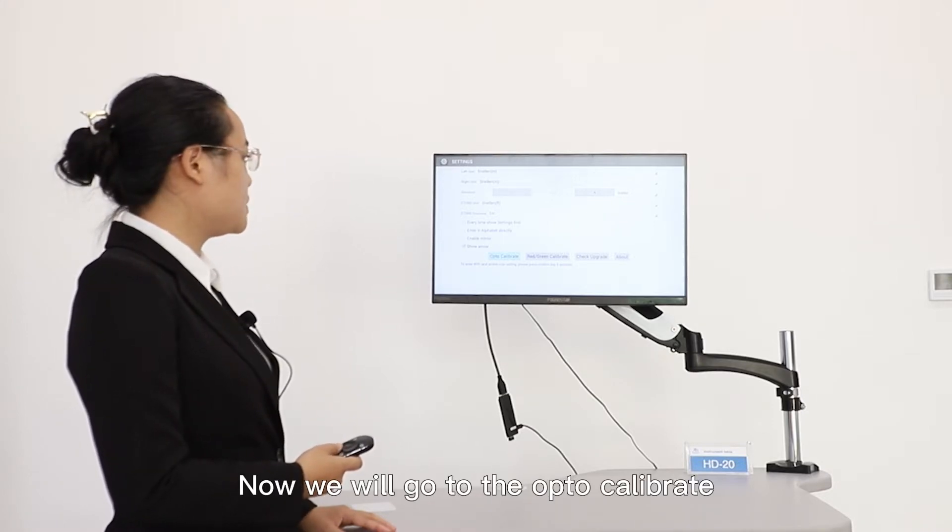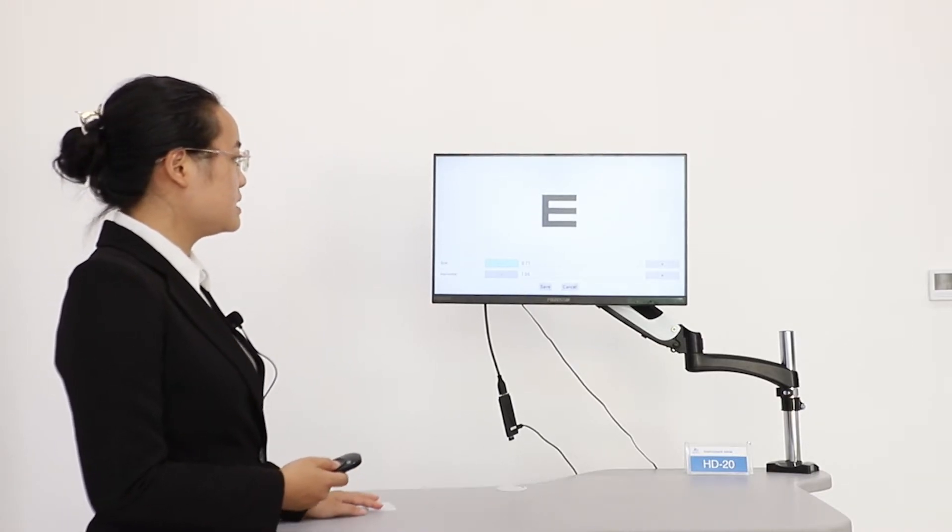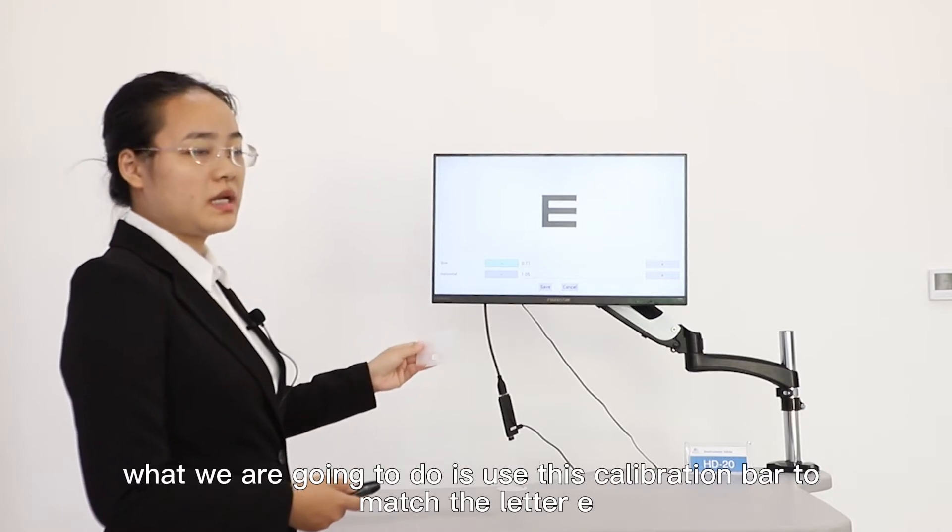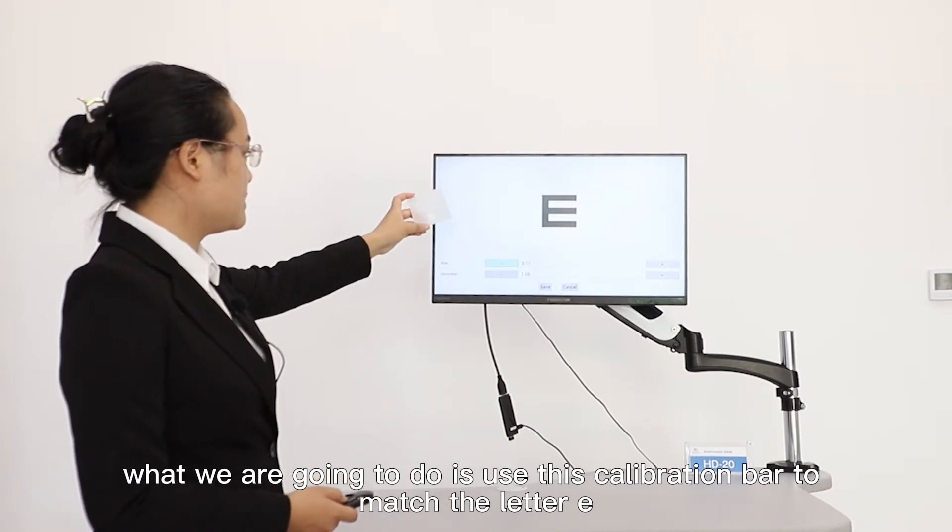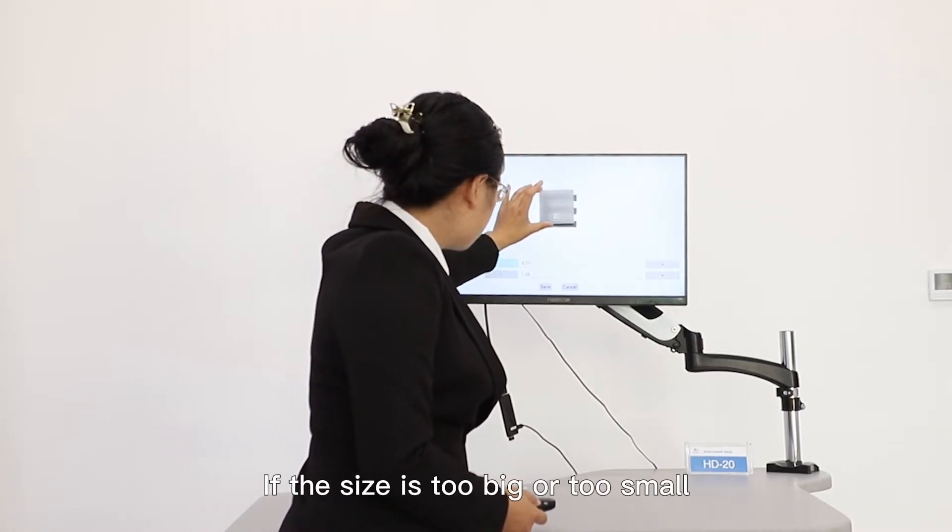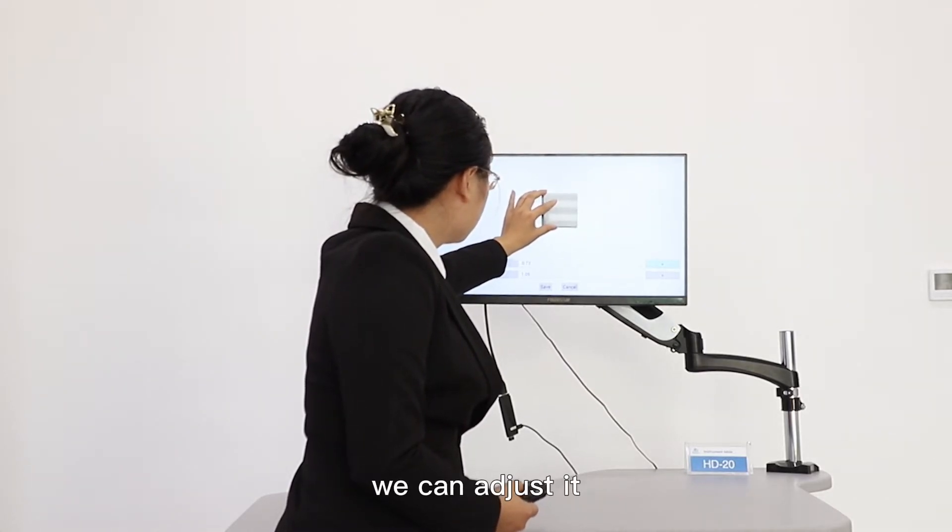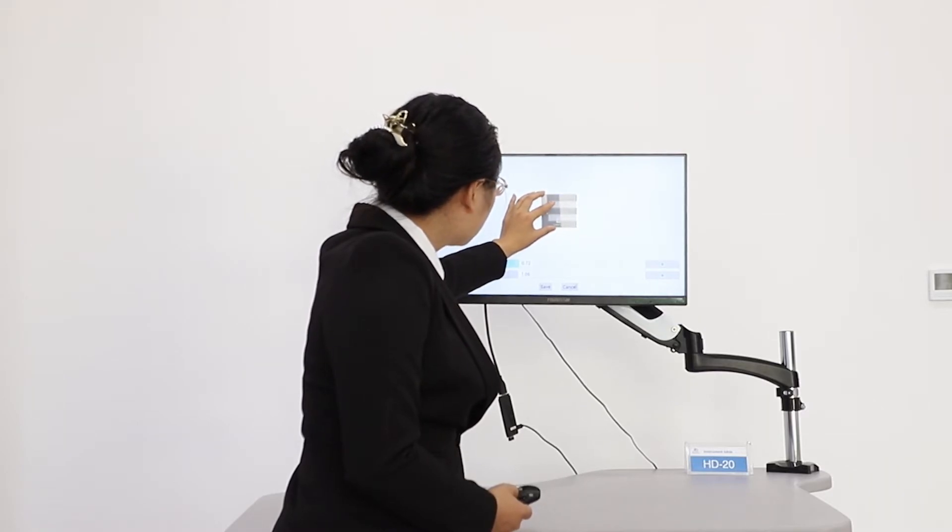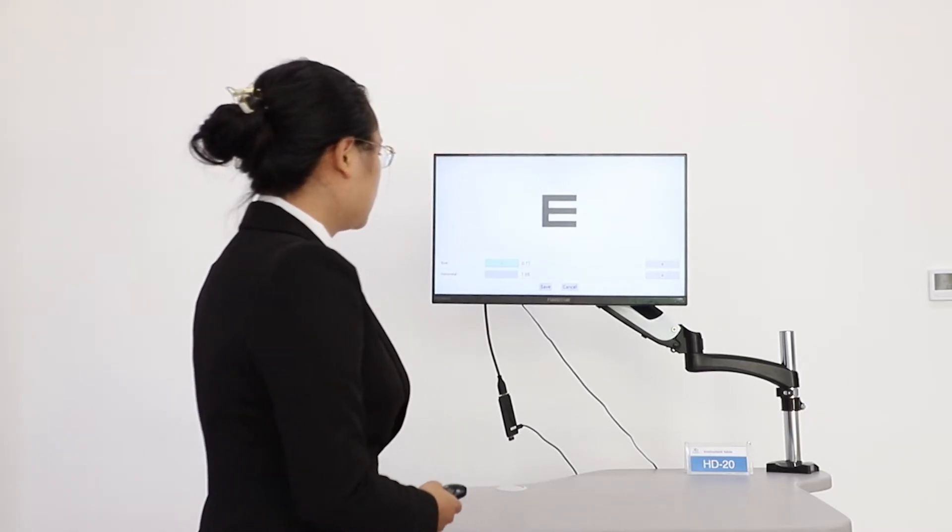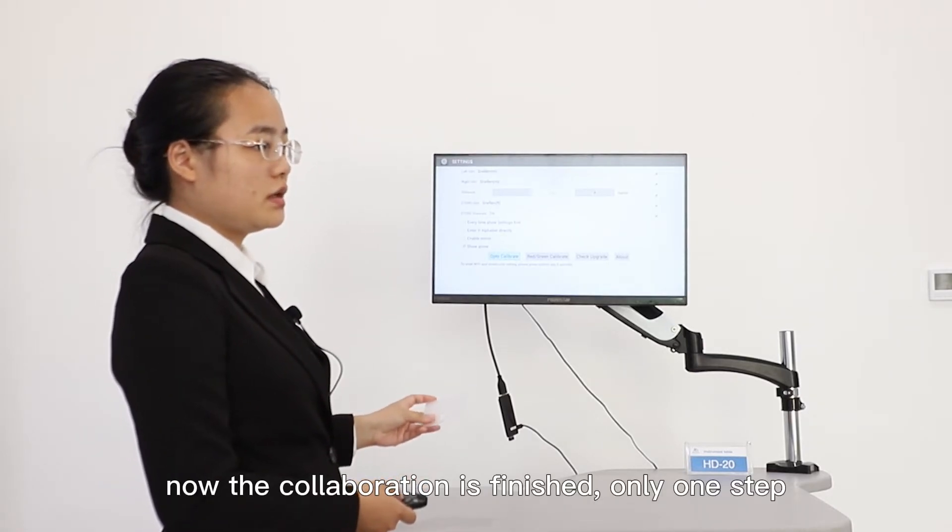Now we will go to the opto-calibrate. As you can see, there is a letter E on the monitor. All we need to do is use this calibration bar to match the letter E. If the size is too big or too small, we can adjust it until the calibration bar fits the letter E. Then we will click save. Now the calibration is finished. Only one step.